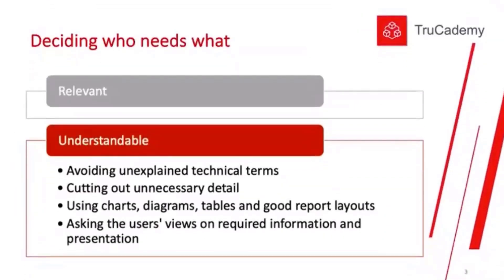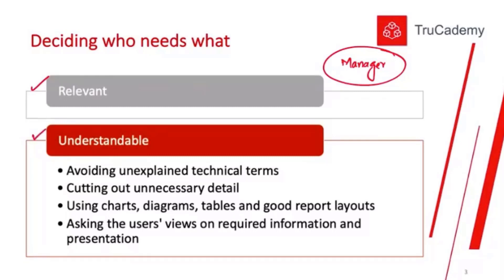When deciding who needs what, the first thing to consider is the relevance of the information. We should only provide information that will be relevant to the manager and that will help in planning, controlling, and decision making. We should not provide any irrelevant or unnecessary information. We should only provide what the manager is looking for and what is relevant to his decision making, planning, or controlling.